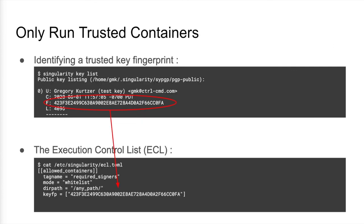Lastly, and I know this strays a little bit from the idea of build, but you can leverage this cryptographic signature model in Singularity to control what containers can be used via an execution control list. Here you can require that certain key fingerprints are necessary for any container to be used.